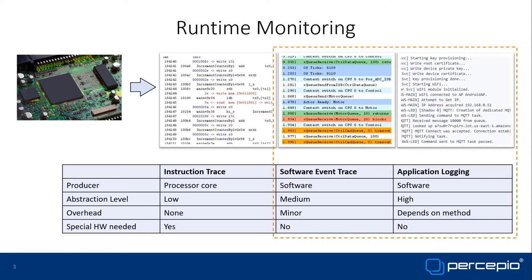On the other end of the scale is instruction trace, where data is generated by the processor core — essentially zero overhead — but the scope is limited by hardware implementation. It's often not possible to record function parameters, return values, or local variables, and it requires expensive bulky equipment and a processor with high-speed trace ports. This also produces large amounts of low-abstraction data that can be difficult to analyze. A middle path is software event tracing, which has the flexibility of application logging but is much faster, measured in microseconds per event, with instrumentation typically predefined within RTOS or middleware APIs. At Percepio, we currently focus on software event tracing and application logging.